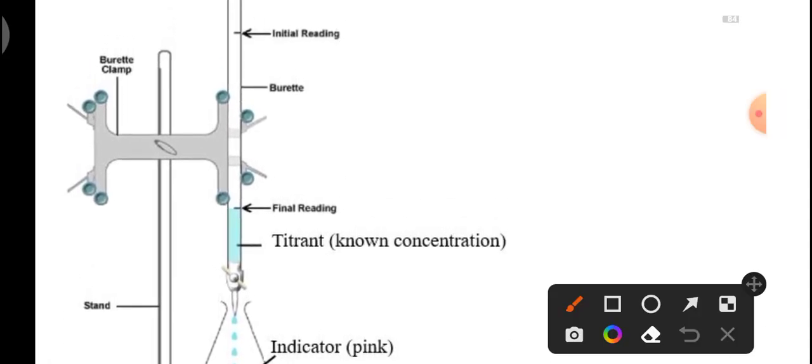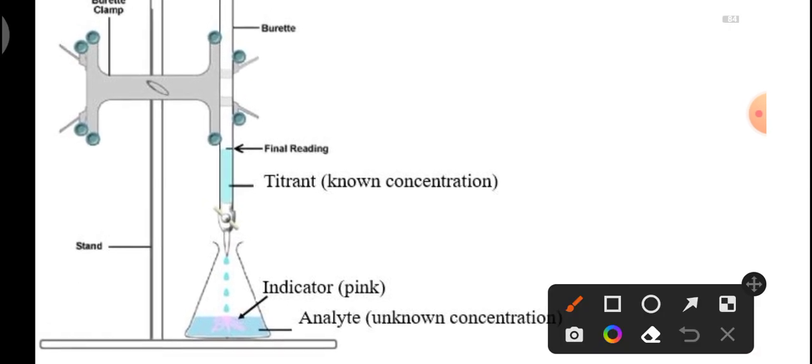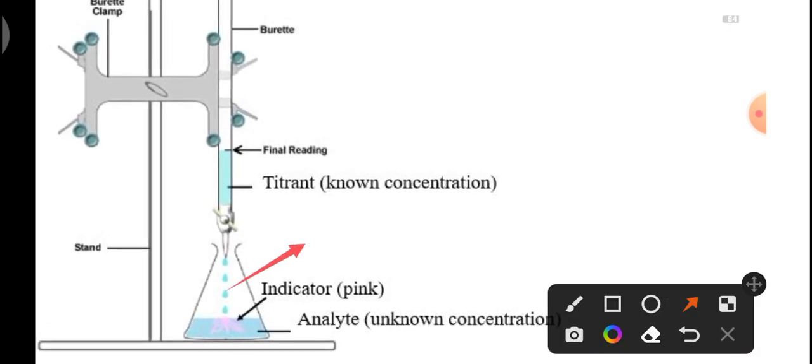Sometimes examiners may ask questions from the titration setup, like what is burette. Burette is this glass tube in which we use to fill titrant with the help of a funnel. What is titrant? It is the solution whose concentration is known to us. In conical flask we fill analyte solution. Analyte is the solution whose concentration needs to be checked out.